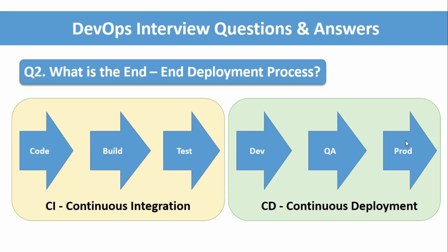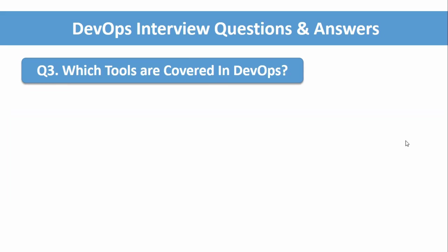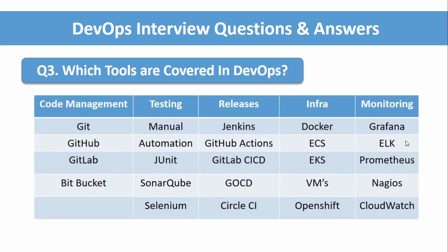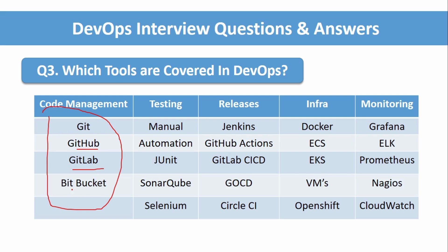The third question: which tools are covered in DevOps? As mentioned, DevOps is not a single tool — it's a methodology that the IT industry follows to maintain and streamline the software development and operations process. For code management, the tools used are GitHub, GitLab, or Bitbucket — it depends on the project. Most companies use GitHub for repository hosting and management.